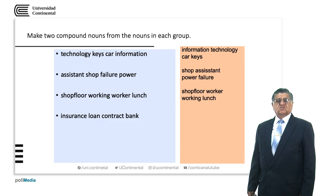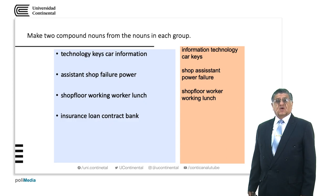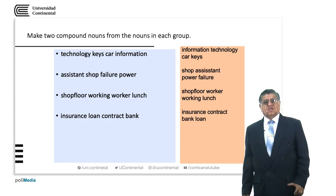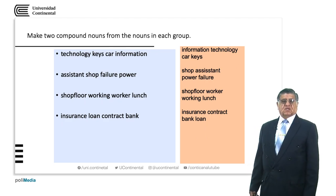Insurance, loan, contract, bank — we can have various possibilities: 'insurance loan', 'insurance contract', 'insurance bank', 'loan bank', many. For example, 'a bank loan' — a bank loan is a loan that a bank gives to somebody.